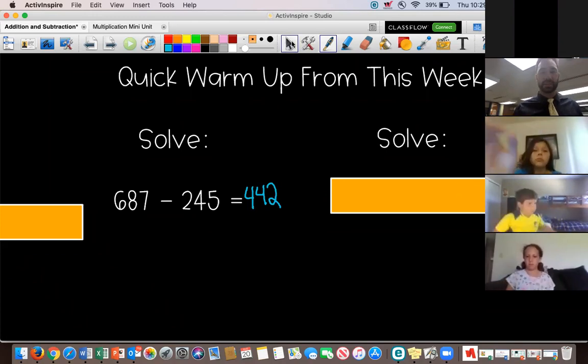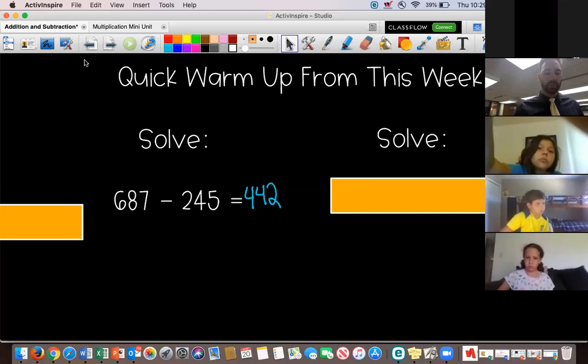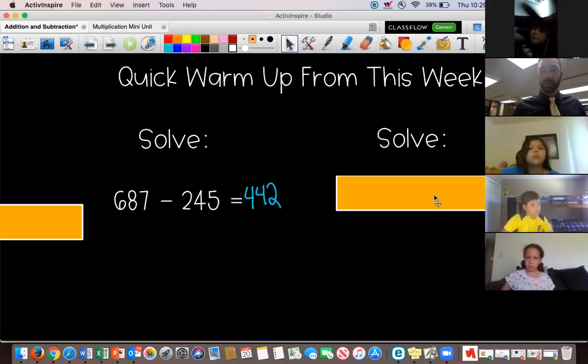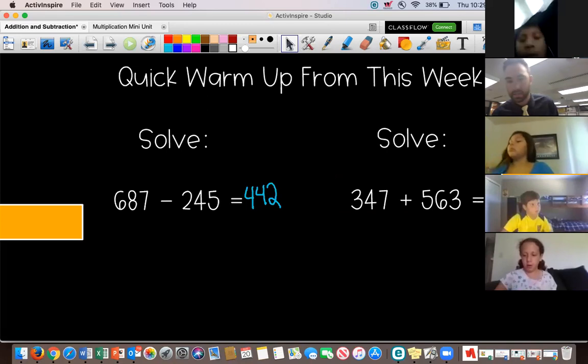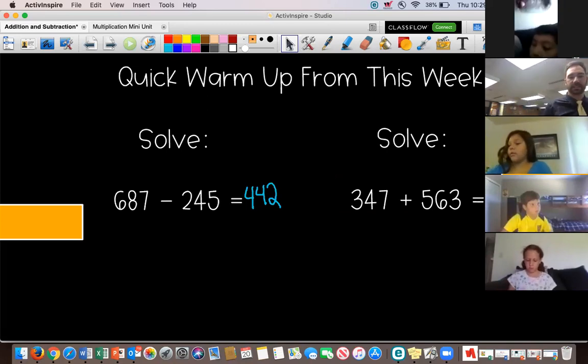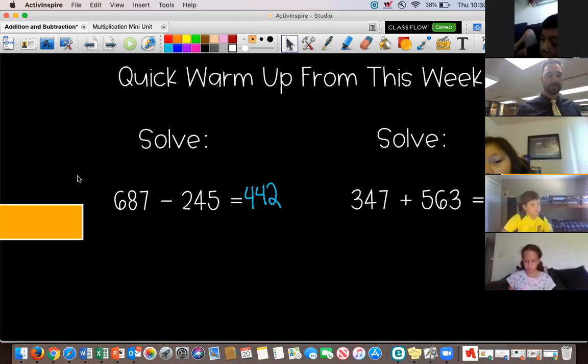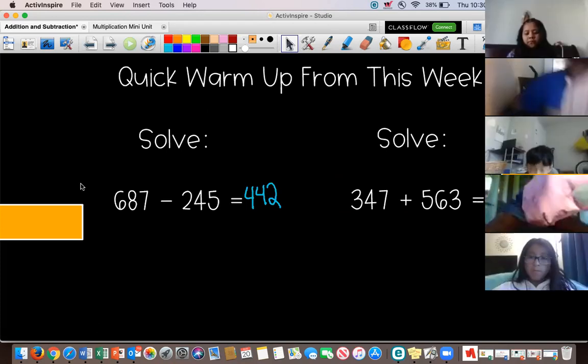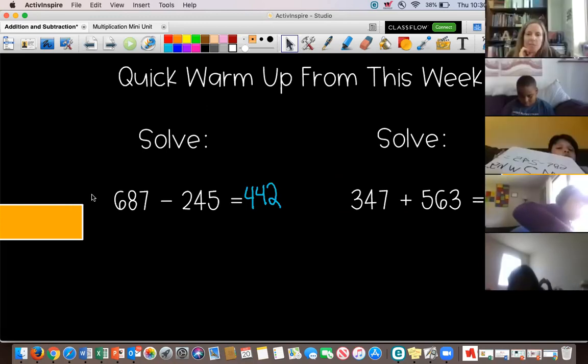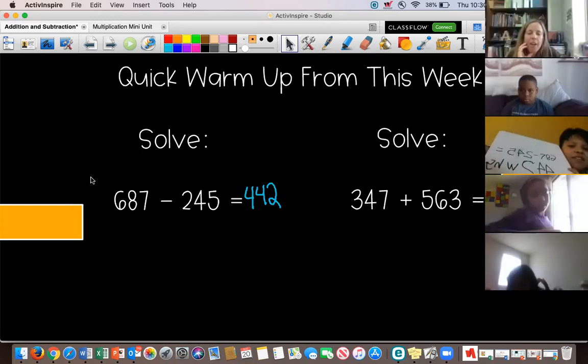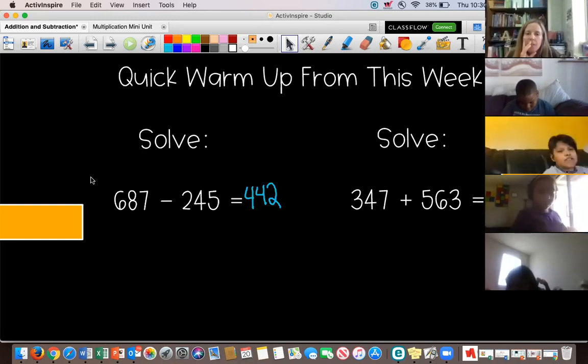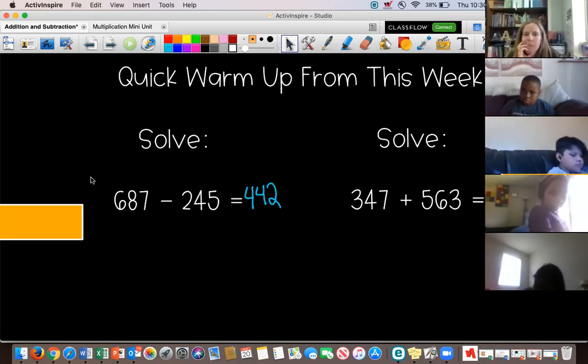It's fine if you use another strategy like the number line or adding up. We're going to do one more and then we'll move on with today. So three hundred and forty-seven plus five hundred and sixty-three. Two minutes. Just like last time, two minutes. And when you're done, just keep your whiteboards down. Try using a different strategy and see if you get the same answer a different way.